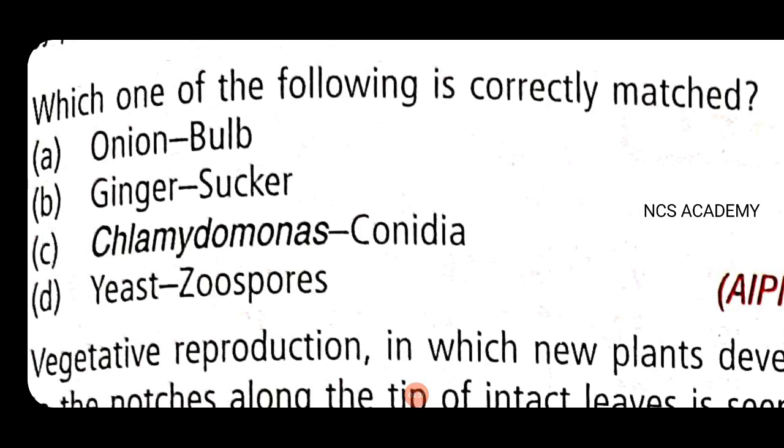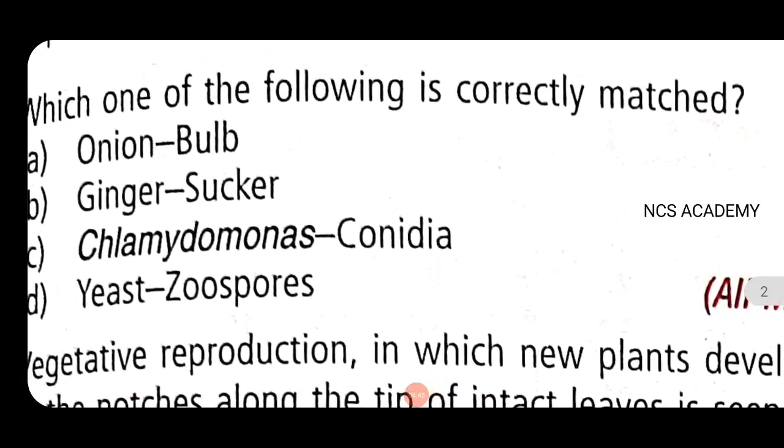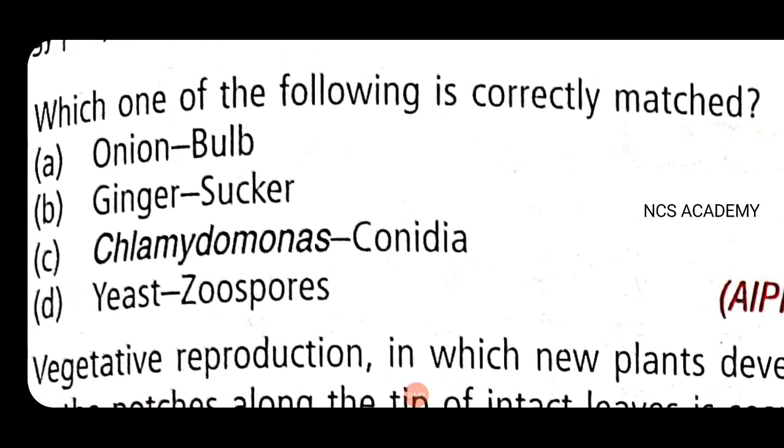Next important question: Which one of the following is correctly matched? The right answer is the right answer. Chlamydomonas has conidia. That is a conidia form. If you use ginger, it is a rhizome, not by sucker.